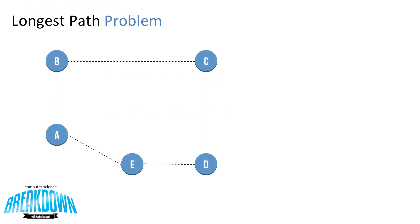So here we have a graph with the nodes A, B, C, D, and E. So the goal of this problem is to find the longest path between two vertices without repeating an edge.